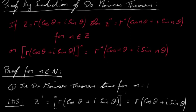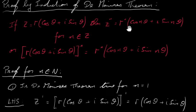In this video I'm going to prove by induction De Moivre's Theorem. So first of all, let's have a look at what De Moivre's Theorem is. We have been talking in previous videos about complex numbers in polar form. So looking at a complex number in polar form: r(cos θ + i sin θ), if we raise that to the power of n, then it should be r^n(cos nθ + i sin nθ).